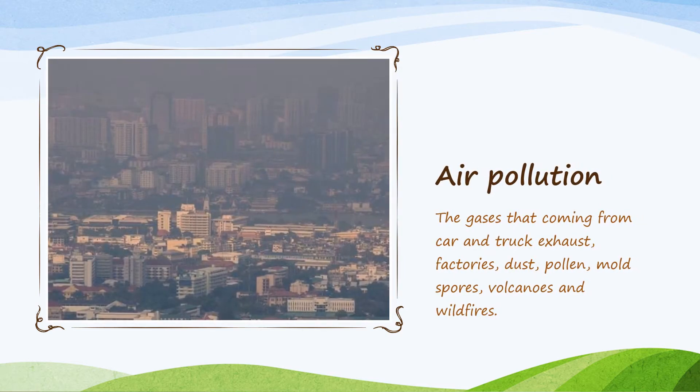How about this picture? We cannot see the picture clearly — we cannot see how clear the environment is. So what is the problem? Air pollution. The gases coming from car and truck exhausts, factories, dust, pollen, mold spores, volcanoes, and wildfires — that is why the air is not okay.